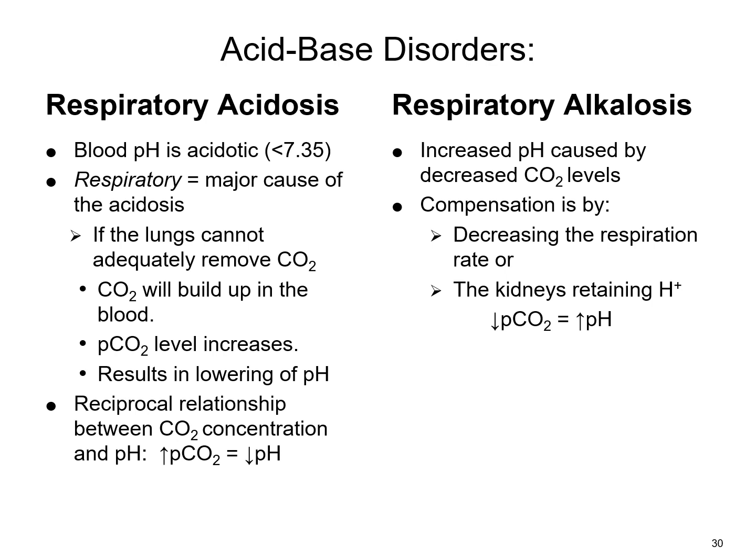With respiratory acidosis, the blood pH is acidic. If the lungs cannot adequately remove CO2, it builds up, raising PCO2 and lowering the pH — there is a reciprocal relationship between CO2 concentration and pH. With respiratory alkalosis, there is an increase in pH caused by a drop in CO2 levels. The body may compensate by decreasing respiration rate or having the kidneys retain hydrogen ions to help restore balance.